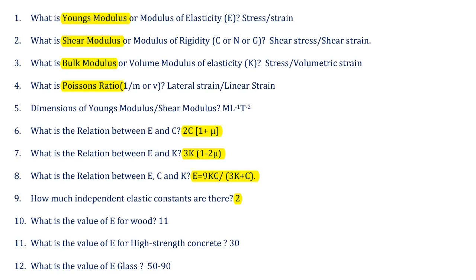Sixth question: what is the relation between E and C? Please remember — E and C involves a plus symbol, while E and K involves a minus symbol. The relation between E and C is: E = 2C(1 + Mu). The relation between E and K is: E = 3K(1 − 2Mu).